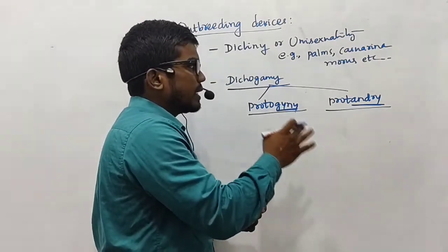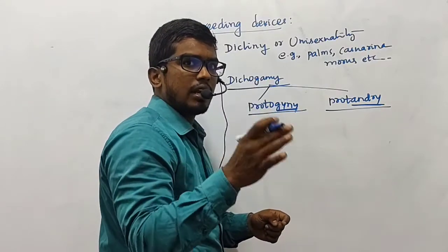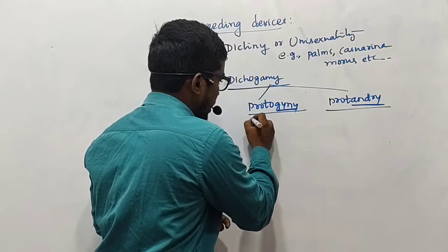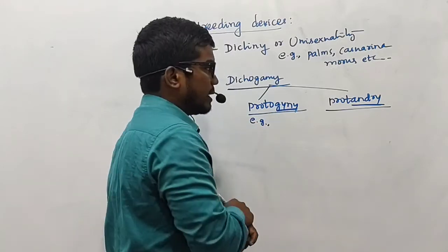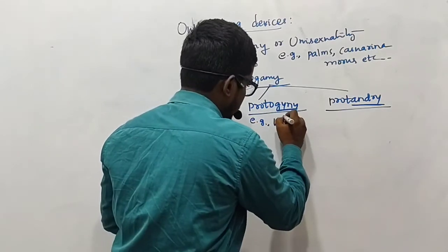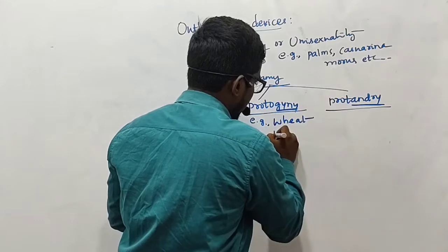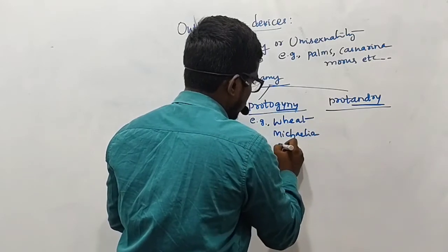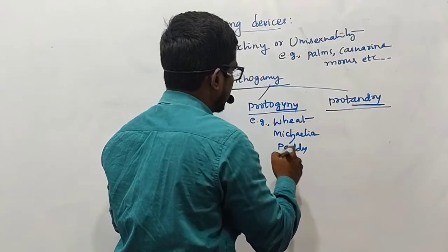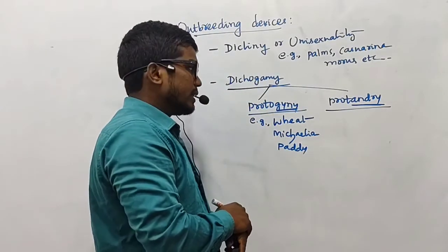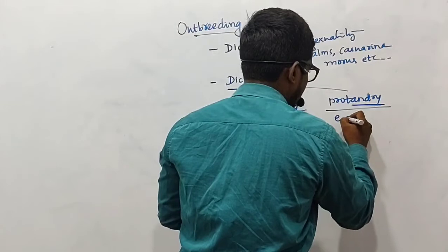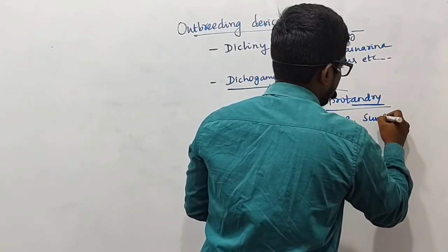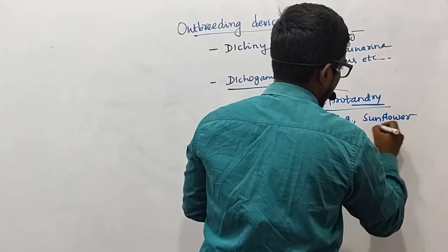This time interval in protogyny avoids self-pollination and helps carry out cross-pollination. Examples of protogyny include wheat, Michelia, and paddy. In the case of protandry, the best examples are sunflower and onion.